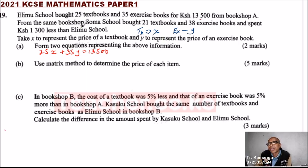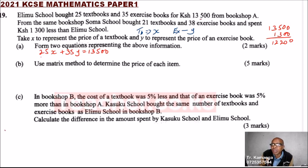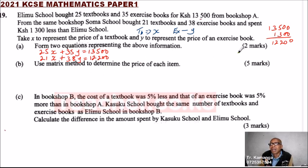For Soma school, they spent 1,300 more than Erimu. So we subtract: 13,500 minus 1,300 gives us 12,200. That means they spent 12,200 and bought 21 textbooks plus 38 exercise books. So the second equation is: 21X + 38Y = 12,200.